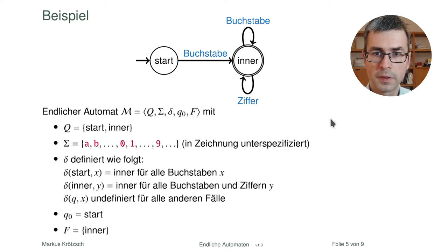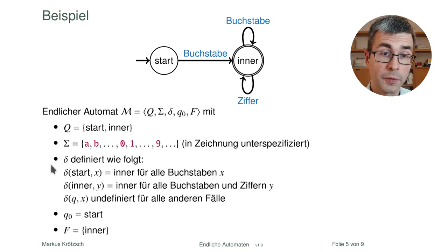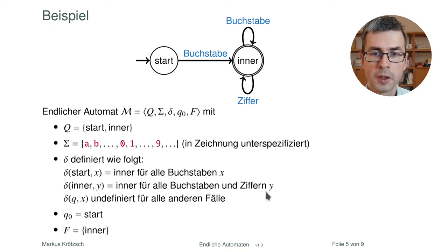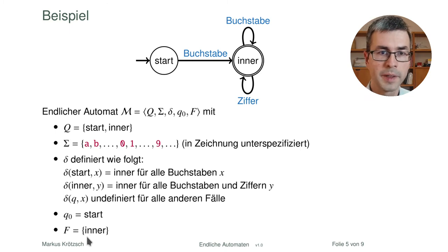Jetzt zur Formalisierung unseres Beispiels. Wir haben zwei Zustände: Q ist eine zweielementige Menge mit 'start' und 'inner'. Das Alphabet enthält zumindest Buchstaben und Ziffern. Die Übergangsfunktion definiert: im Zustand q_start gelangen wir mit δ zu 'inner' für alle x, die Buchstaben sind; im Zustand 'inner' gelangen wir ebenfalls zu 'inner' für alle y, die Buchstaben oder Ziffern sind. Für alle anderen Fälle ist δ nicht definiert — sie ist also partiell. q0 ist der Startzustand 'start', und F ist die einelementige Menge {'inner'}.